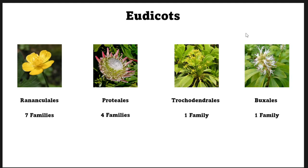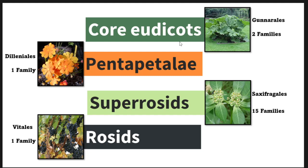Eudicots have four separate orders placed before the core eudicots: Ranunculales with seven families, Proteales with four families, Trochodendrales with one family, and Buxales with one family. Core eudicots also have one separate order: Gunnerales with two families. Within Pentapetale there is a separate order, Dilleniales, comprising one family. There is one more separate order in superrosids: Saxifragales with 15 families, and another in rosids: Vitales with one family.